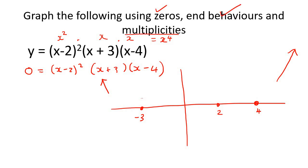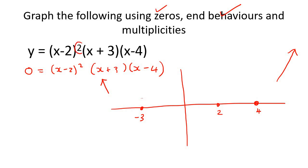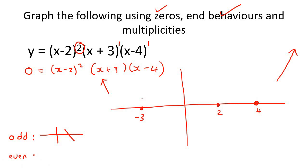Now we need to look at multiplicity. For multiplicity, you need to look at your brackets and the power on each one. That's a 2, this one's a 1, and this one's a 1. The rule is: if it's an odd number, the graph goes through the x-axis. If it's an even power, it doesn't go through — instead it turns on the x-axis.